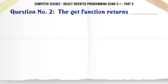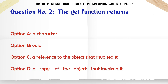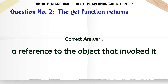The get function returns. A. A character. B. Void. C. A reference to the object that invoked it. D. A copy of the object that invoked it. The correct answer is: A reference to the object that invoked it.